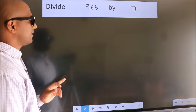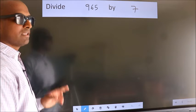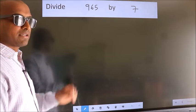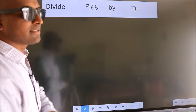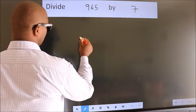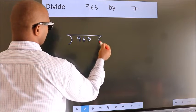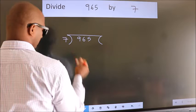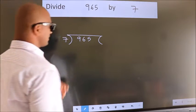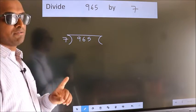Divide 965 by 7. To do this division, we should frame it in this way. 965 here, 7 here. This is your step 1.